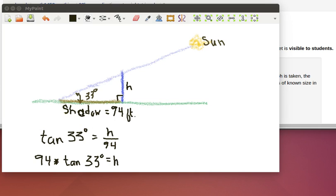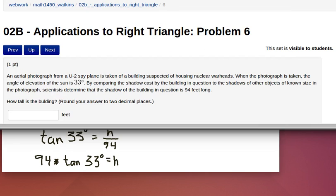Remember, we saw the right triangle. We saw that the tangent of 33 degrees was equal to H divided by 94. We multiplied both sides by 94 and got 94 times the tangent of 33 degrees is equal to H. So we're going to put that particular information in here. We're going to say that 94 times the tangent of 33.